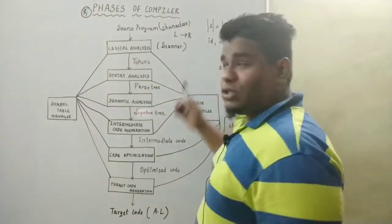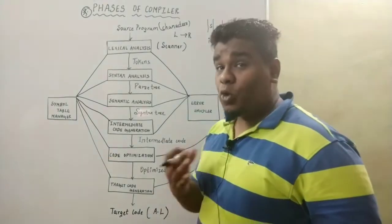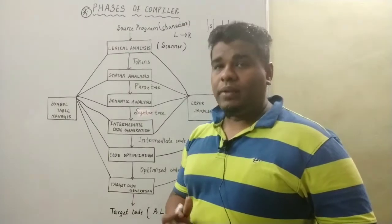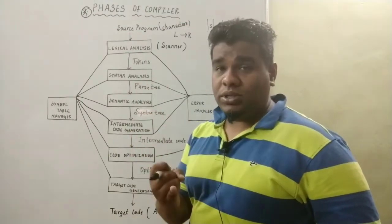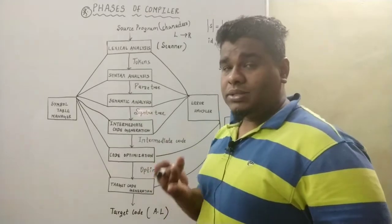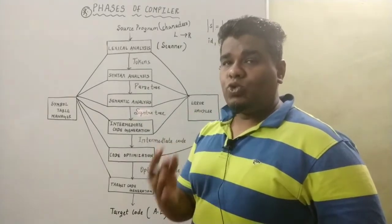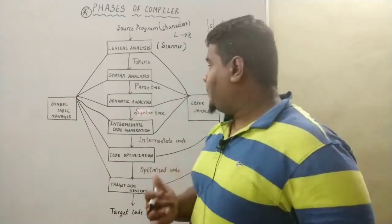So what is a token? The smallest individual unit in a programming language is called a token. What are the different kinds of tokens? We have keywords, followed by identifiers, constants, strings, and operators.